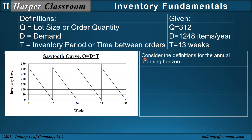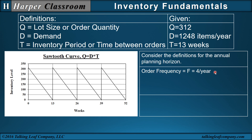Let's consider the definition for the annual planning horizon. Notice 52 weeks here is one year. Over one year, we have received and used up an order four different times — that's referred to as my order frequency, so I have four per year. Our inventory period is 13 weeks, which is the same as one-fourth of a year. The order frequency is four per year. Notice the reciprocal nature: the order frequency of four per year is the reciprocal of the inventory period of one-fourth of a year. The frequency will be the reciprocal of the periodicity, and the periodicity is the reciprocal of the frequency.